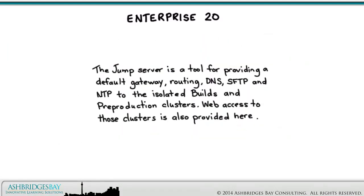The Jump Server is a tool for providing a default gateway, routing, DNS, SFTP, and NTP to the isolated builds and pre-production clusters. Web access to those clusters is also provided here.